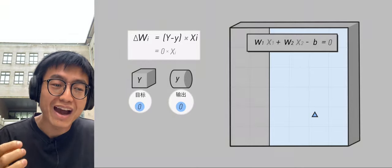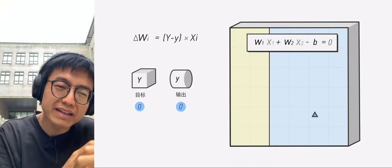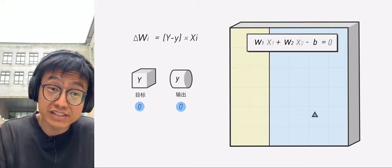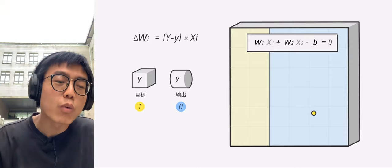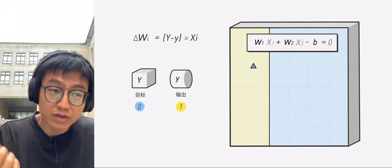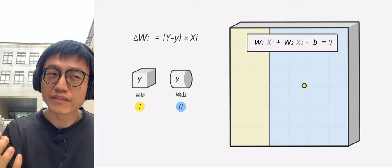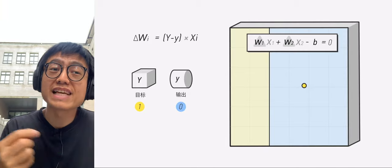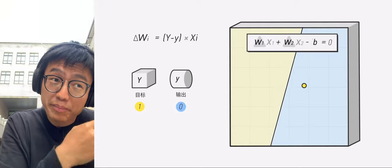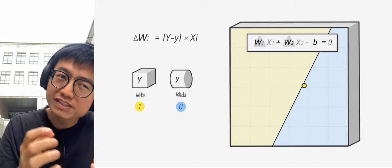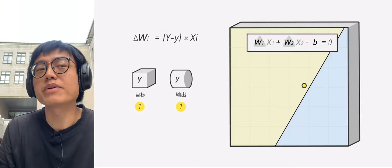At this point, Wi does not need to be adjusted. If uppercase Y minus lowercase y is not zero, then there are only two results: 1 minus 0 equals 1, or 0 minus 1 equals negative 1. If the result is 1, it means that the previous W is too low. In order to make Fx greater than B, we need to increase W. So the delta W must be a positive number at this time.